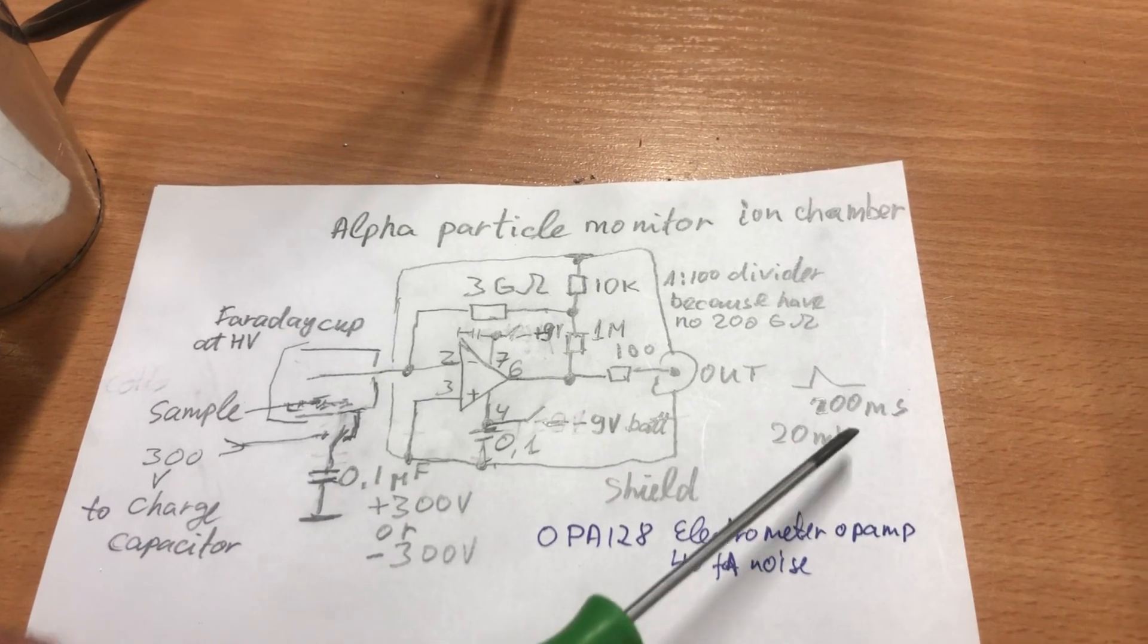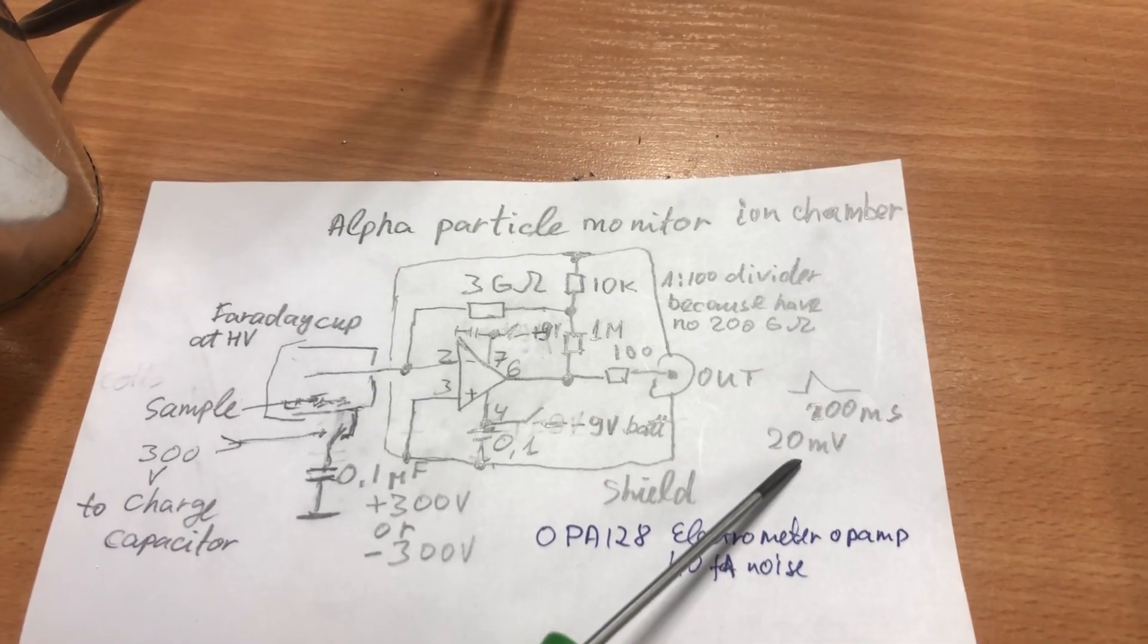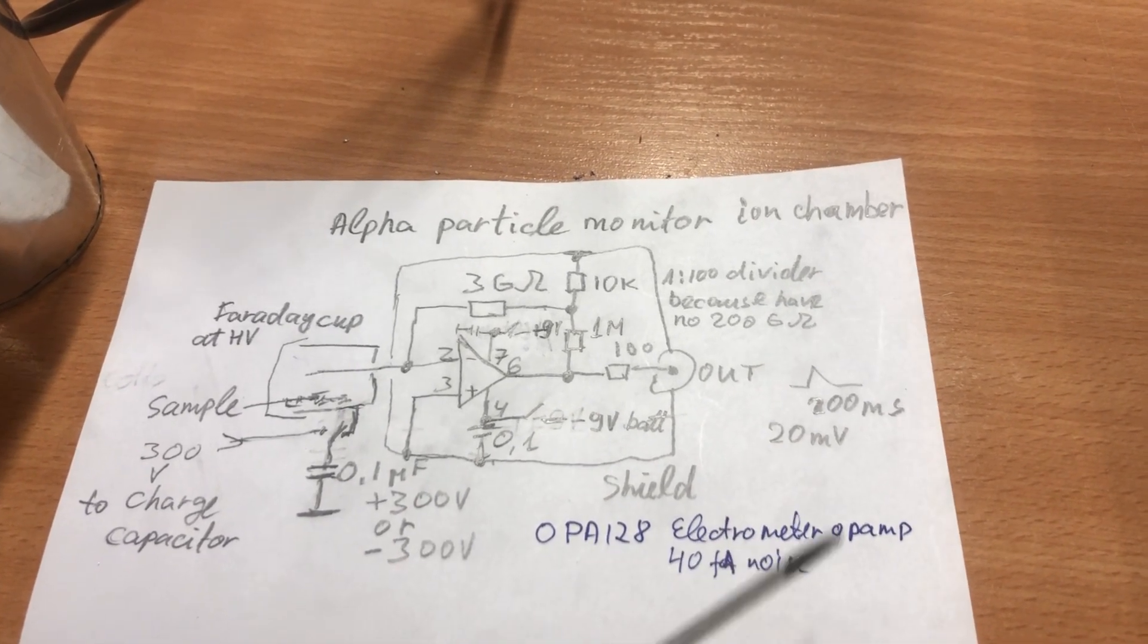Output pulses are about 200 milliseconds long and 20 millivolts in amplitude.